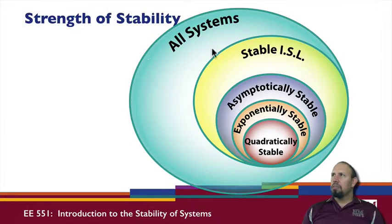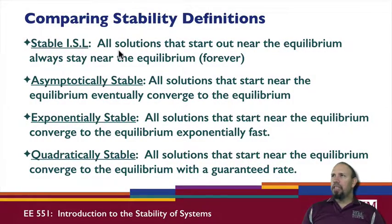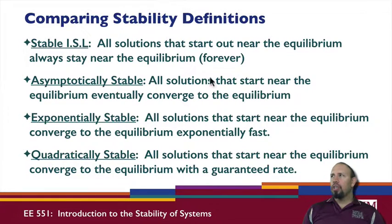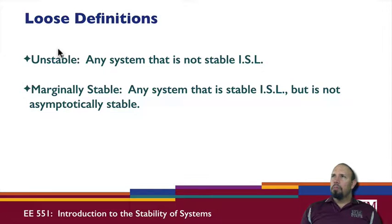In terms of nesting: all systems (stable and unstable) contain systems stable in the sense of Lyapunov; within that are asymptotically stable systems; within that are exponentially stable systems; and within that are quadratically stable systems. ISL means solutions stay near the equilibrium; asymptotic means they converge; exponential means they converge exponentially fast; quadratic means they converge with a guaranteed rate.